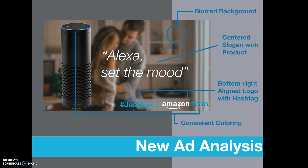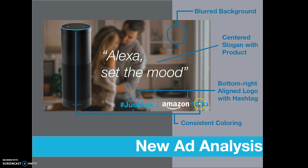Talking about design principles, proximity is very similar. The quotation message and the product are both centered and belong together. At the bottom, the two elements are in proximity with each other, showing they belong to one another. Alignment is once again centered for the main content and bottom-right aligned for the logo. Color is once again consistent — the same color appears on the bar, the text, and is used as a drop shadow on the message to help it stand out from the background.